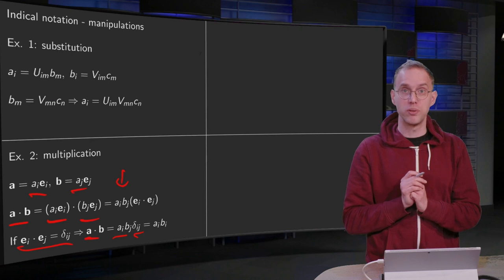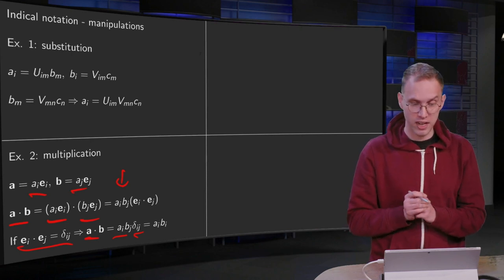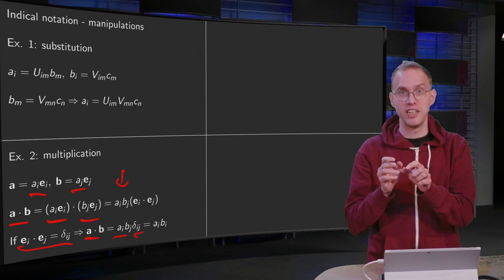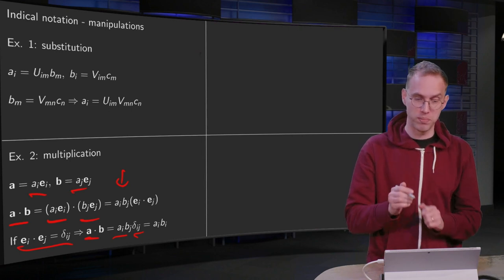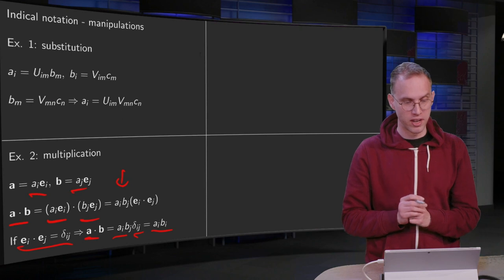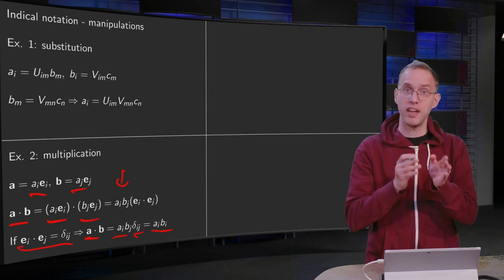And of course you can now, for example, do the summation over j, because b_j times delta_ij, you have seen it before, it's just b_i. So our inner product A · B becomes a_i b_i.